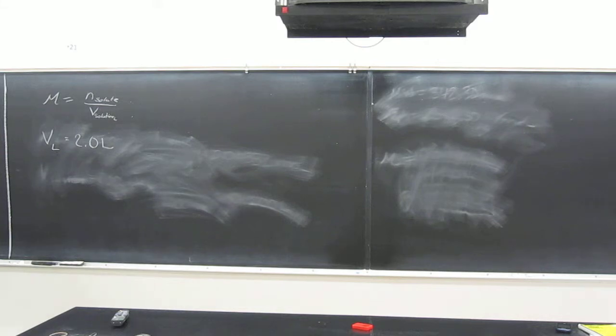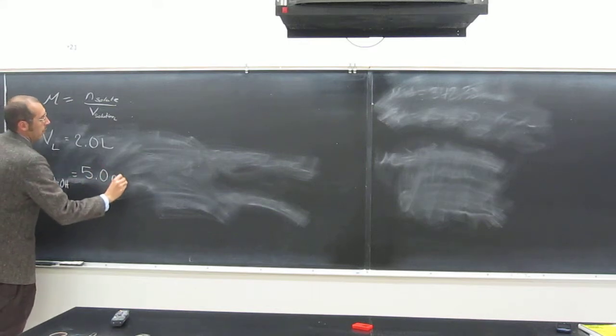And what else do we know about this? The number of moles. The number of moles of NaOH. And in this case, NaOH, of course, is the solute. And what is that number? 5.0 moles.